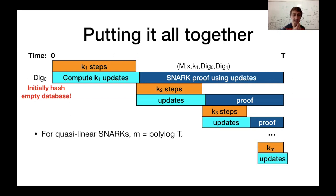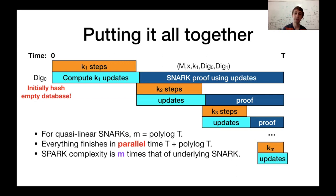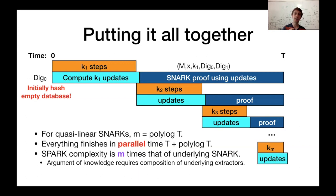If we start with a SNARK with quasi-linear overhead, the number of sub-protocols we need is only polylogarithmic in t, and we've guaranteed that everything finishes in parallel time which is essentially t with only an additive polylog t overhead. The SPARK complexity we get is essentially m times that of the underlying SNARK for all parameters of interest, and because m is polylog, this preserves the succinctness and efficiency properties we need. Proving the argument-of-knowledge property is a little non-trivial in that we have to compose the underlying extractors, but we show the full details in the paper.